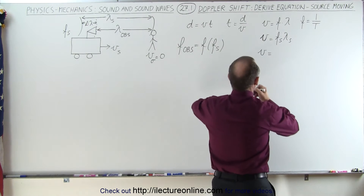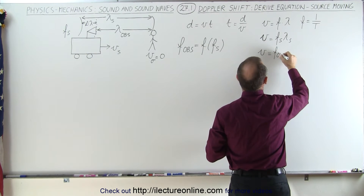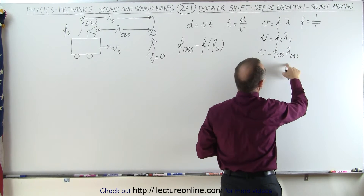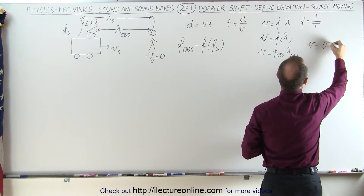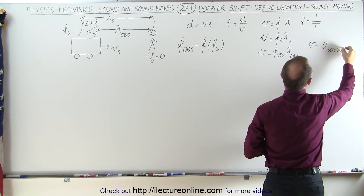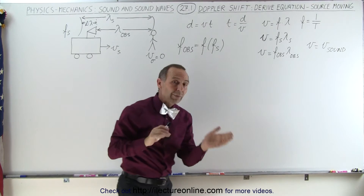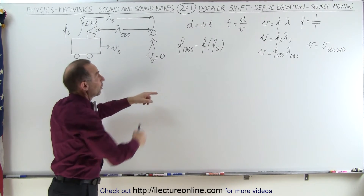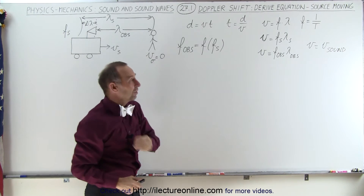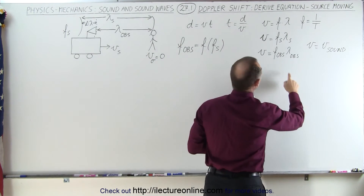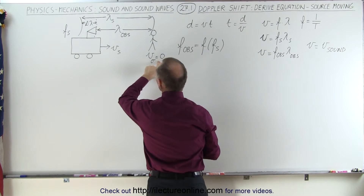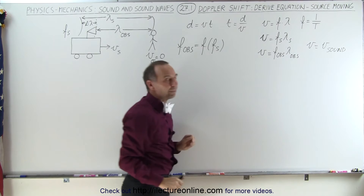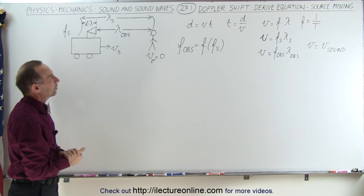The velocity of sound in air equals the frequency observed times the wavelength observed — that's the better way of writing it — where V is the velocity of sound in air. In these equations we have three velocities: the velocity of the observer, the velocity of the source, and the velocity of sound in air, which we'll just call V. We have to make sure we differentiate between those.